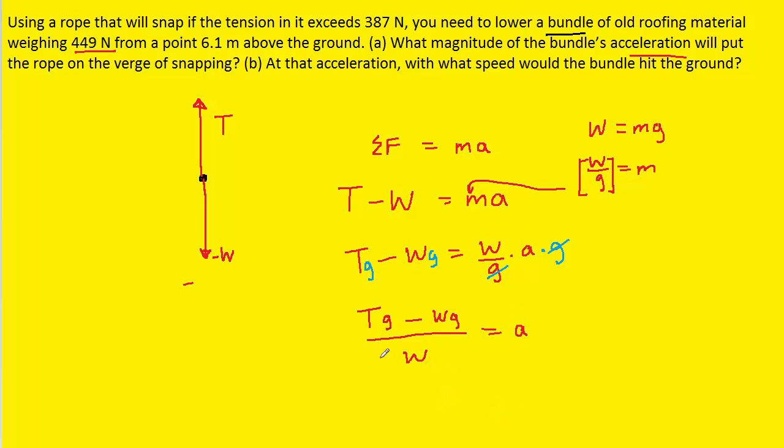And so at this point we could plug in the known values. We know that the tension T has a maximum value of 387. The weight was 449. G is 9.8 so we can just plug those values in.